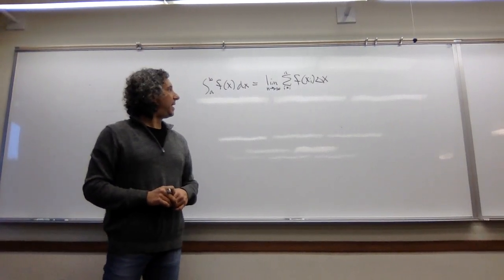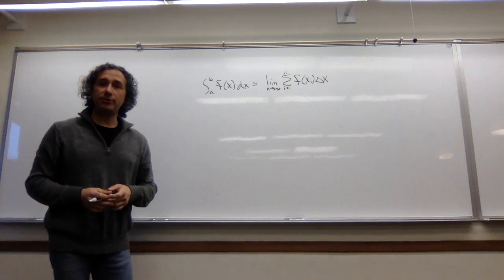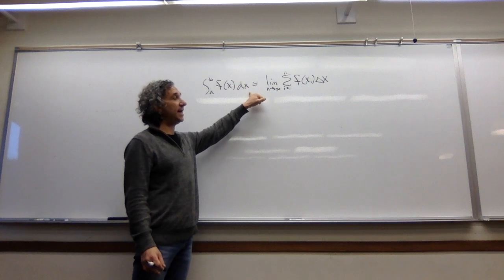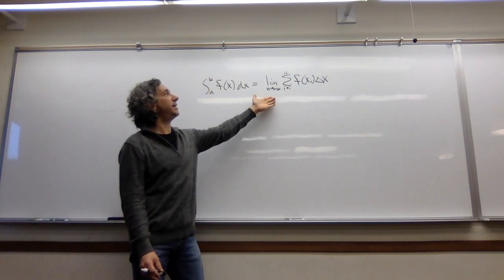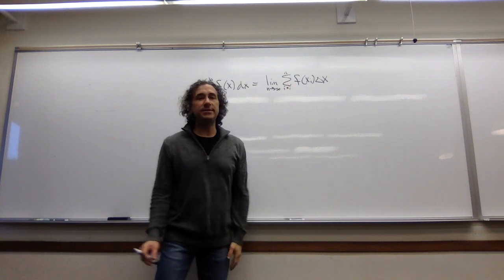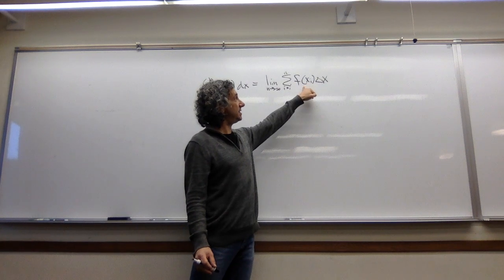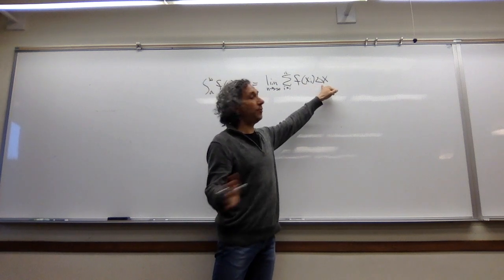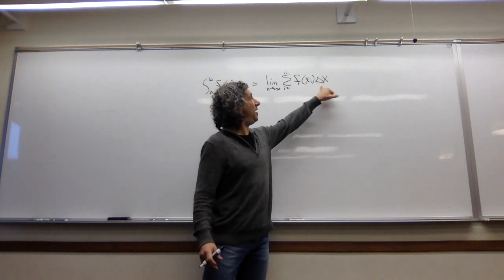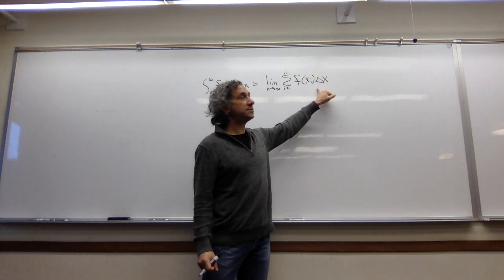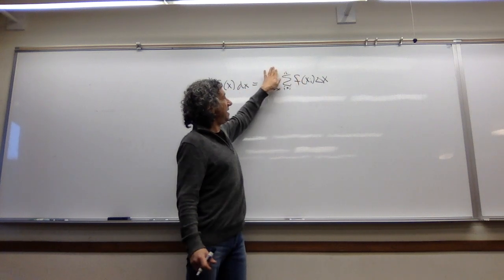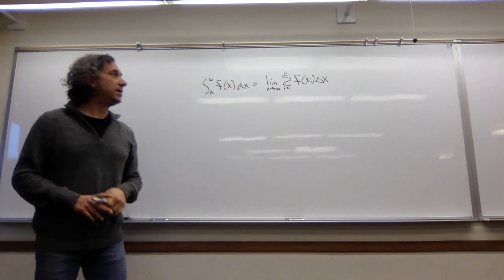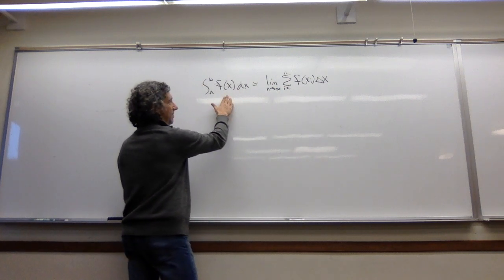Hi! Last time what we did is we introduced some new notation. We said that the integral from a to b of f dx is exactly the same as this horrific looking limit. So again, what this limit is doing is taking each height of the function in a particular sub-interval and multiplying it by the width. So we're just getting a bunch of areas of rectangles assuming that the function is positive, adding n of them up, and then taking the limit as the number of rectangles approaches infinity.